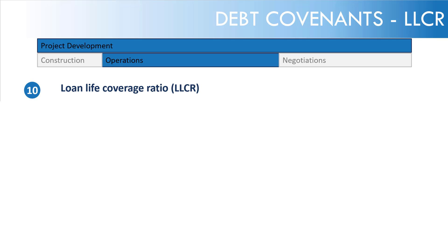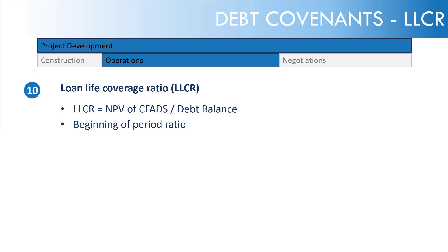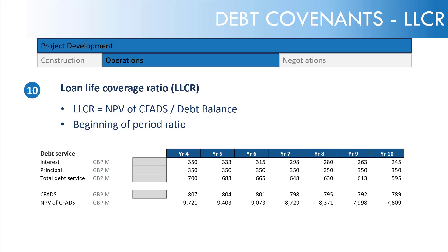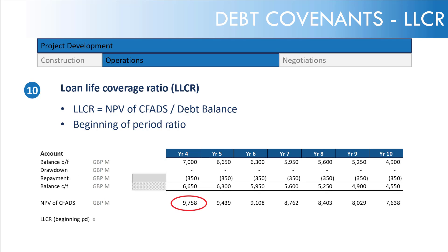Let's turn our attention to the loan life coverage ratio — a more nuanced concept. It's the coverage of CFADS over the loan life divided by the debt balance. Specifically, how many times does the discounted CFADS — discounted to today, which is why it's an NPV — cover the current debt balance? It's a beginning-of-period ratio. We calculate the NPV of CFADS and divide it by the opening balance. At the beginning of the debt paydown period from year 4, we have an LLCR of 1.47 times, discounted at the cost of debt.